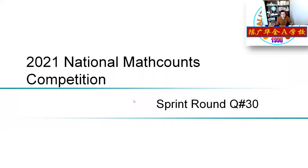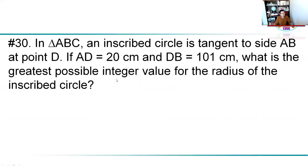Welcome to Out-of-School Classroom. Today we're going to go over the 2021 National Math Competition Spring Round, question number 30. In triangle ABC, an inscribed circle is tangent to side AB at a point D. If AD is given as 20 centimeters and DB is 101 centimeters, that splits AB into two parts from the tangent point. What is the greatest possible integer value for the radius of the inscribed circle?